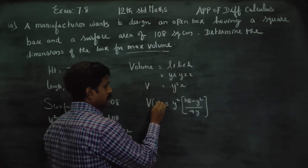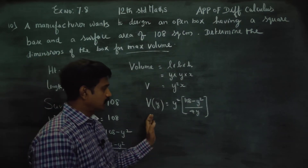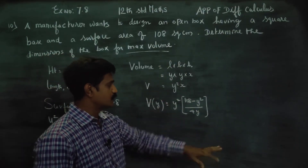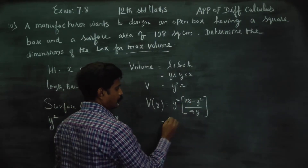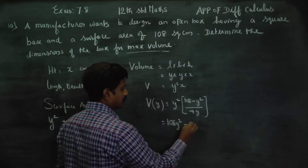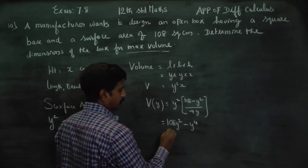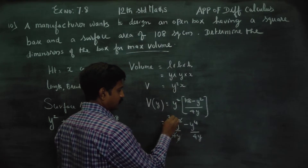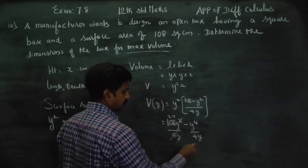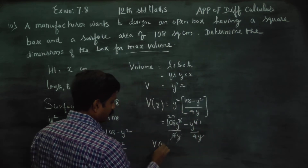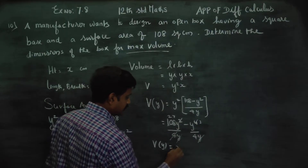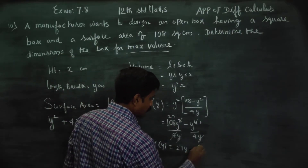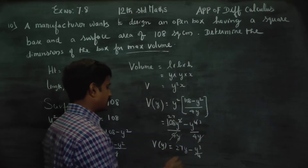So this is V of y — volume as a single variable. Substituting x into the volume formula: V(y) = y squared times (108 minus y squared) divided by 4y, which simplifies to 27y minus y cubed divided by 4. This is the final volume expression.